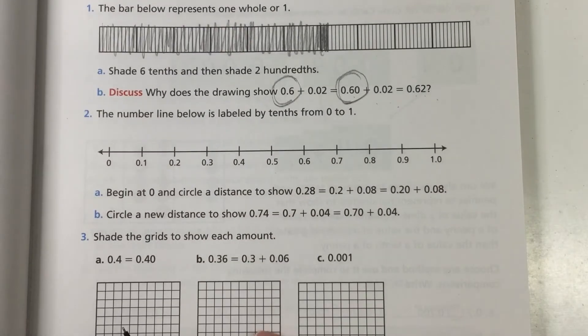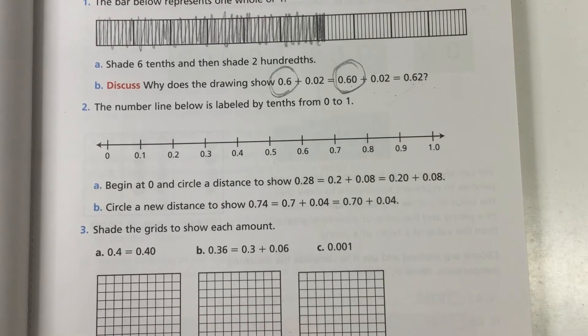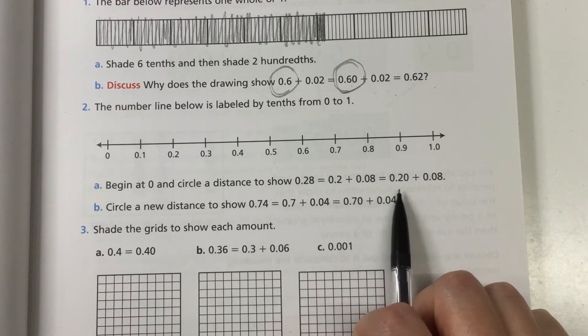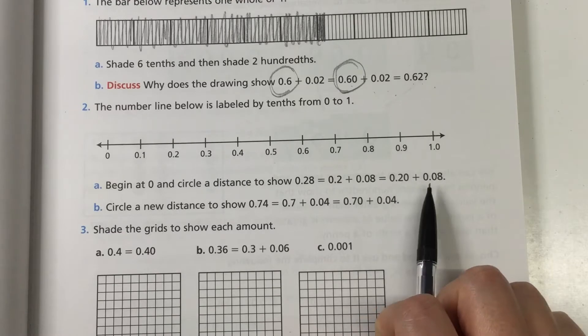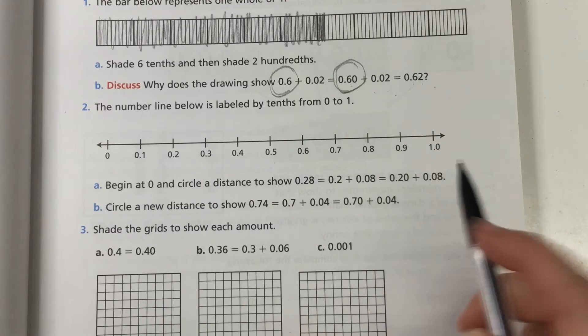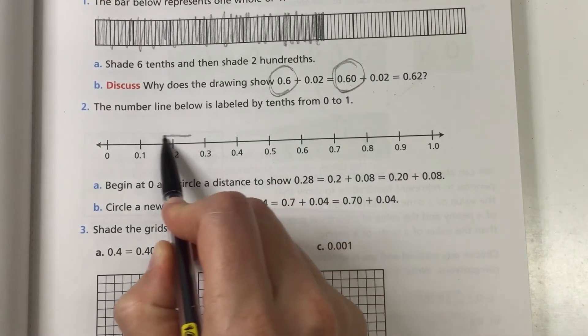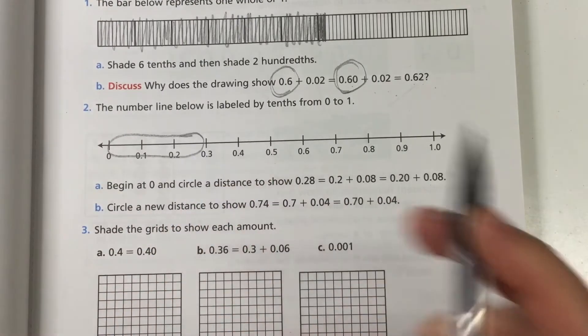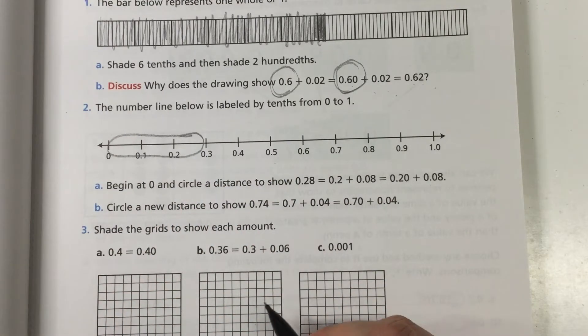The number line below is labeled by tenths from 0 to 1. Begin at 0 and circle a distance to show 28 hundredths or 2 tenths plus 8 hundredths which is the same thing as 20 hundredths plus 8 hundredths. So we're going to be circling 28 hundredths which would be about right there. Maybe I went a little bit too far but that's about right.